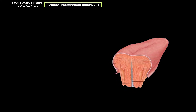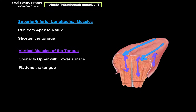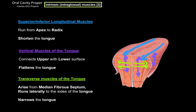Within the tongue itself are the intrinsic muscles. These include the superior and inferior longitudinal muscles, which run from the apex to the root of the tongue and function to shorten the tongue. The vertical muscles connect the upper surface to the lower surface and function to flatten the tongue. The transverse muscles arise from the median fibrous septum and run to the lateral side of the tongue; when they contract, they narrow the tongue.